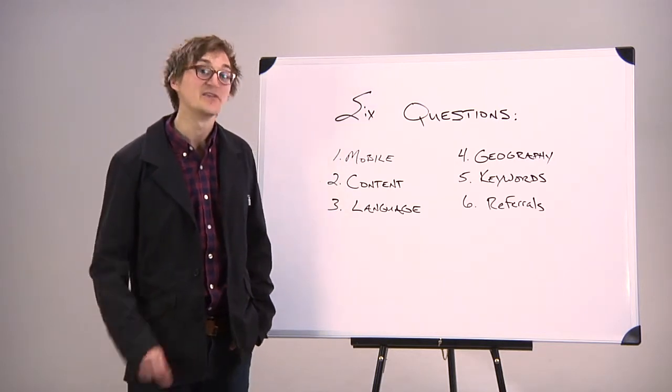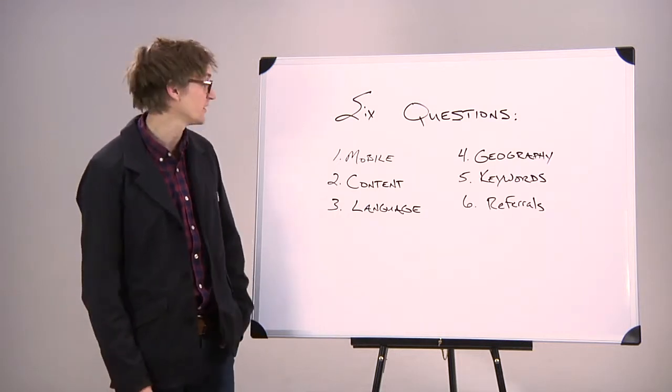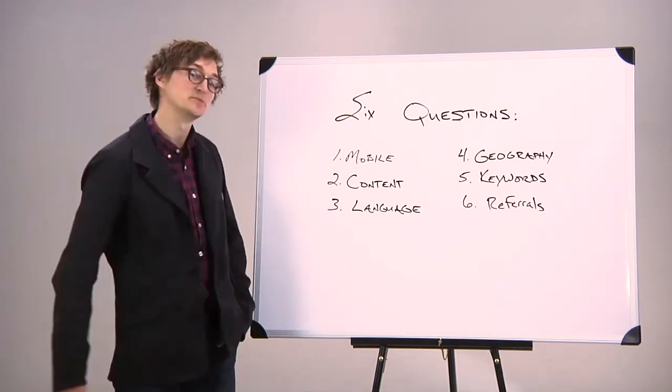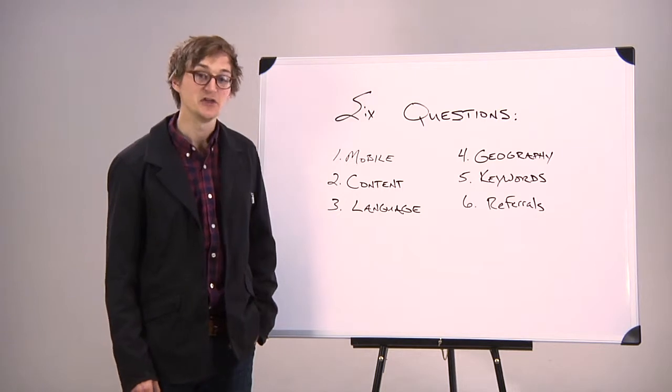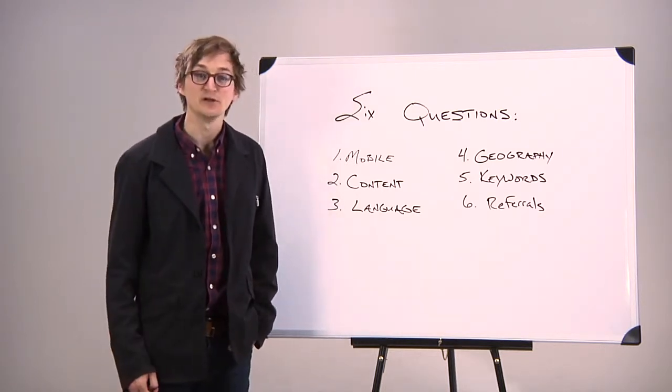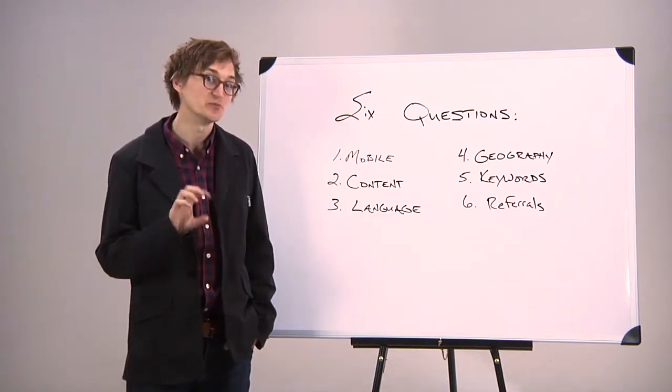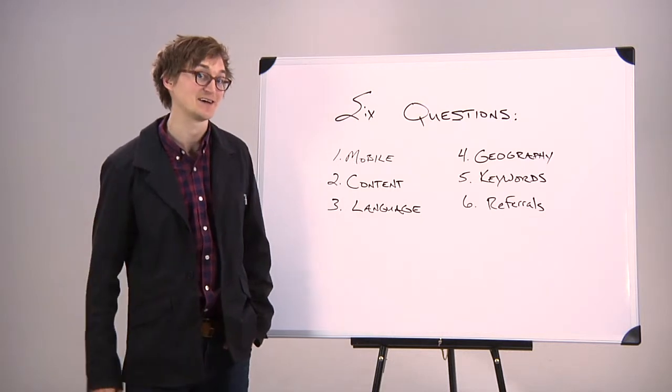The second place where you can find some hidden gold and some ways to sell more cars is by looking at the content people are looking at on your site. You might find that most people are looking at used cars or new cars or maybe financing. By looking at the most popular content, you can edit just those pages to improve them and improve conversion on that content.